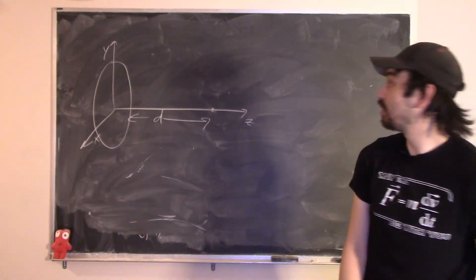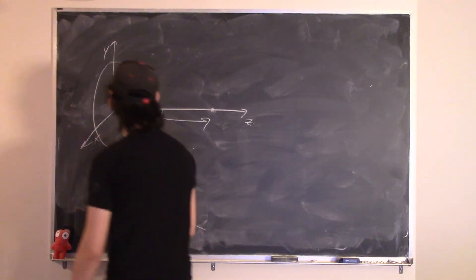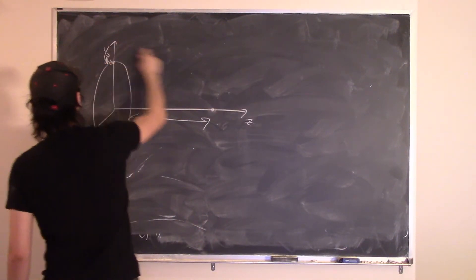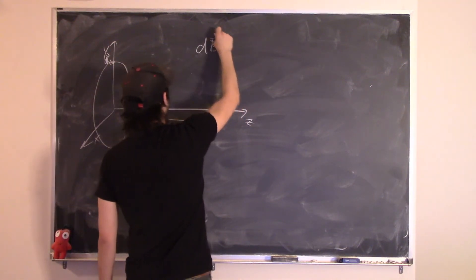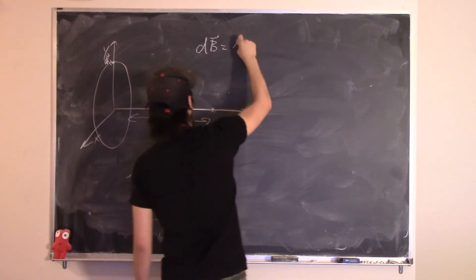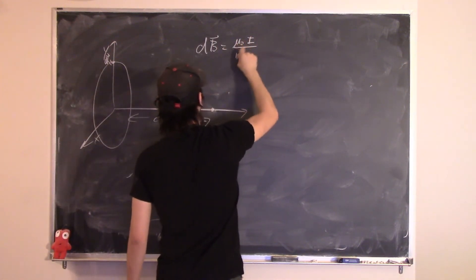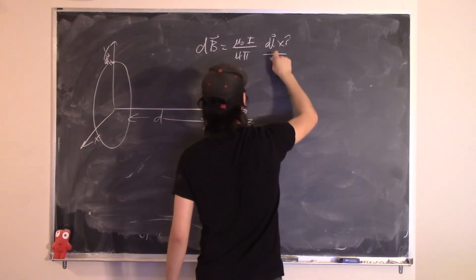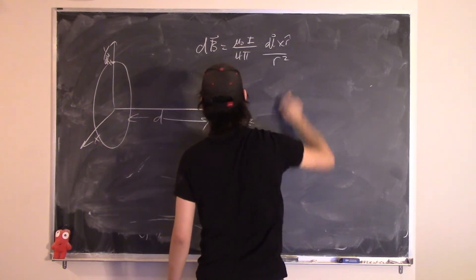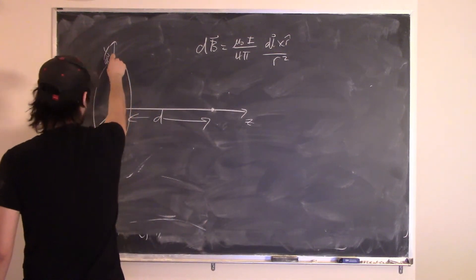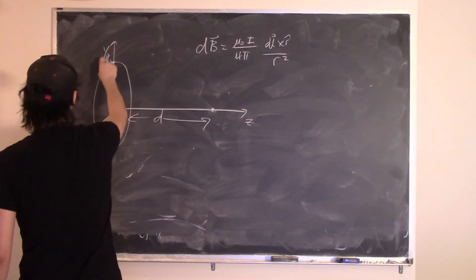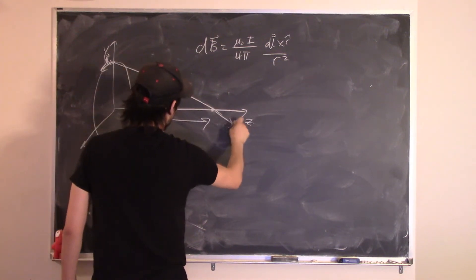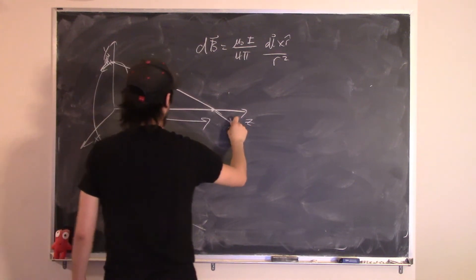When you take the cross product of DL going around the loop with R-hat pointing to the point, you find vectors that point in different directions — ultimately they cancel so the only component remaining is in the Z direction.